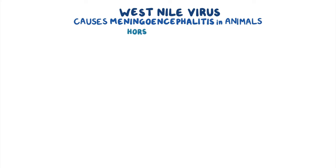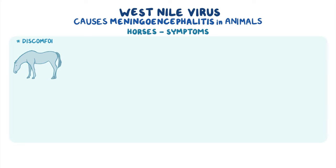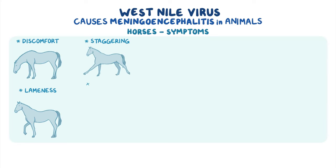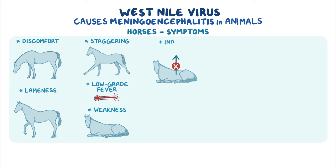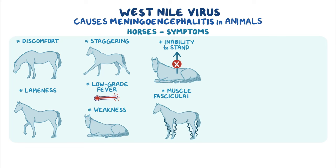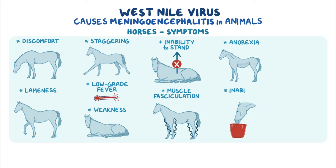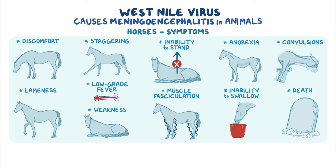In horses, common symptoms include discomfort, lameness, staggering, low-grade fever, weakness, inability to stand, muscle fasciculation, anorexia, and inability to swallow, convulsions, and even death.